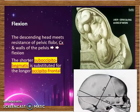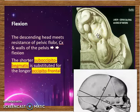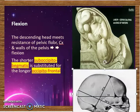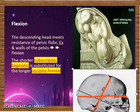Flexion occurs when the descending head meets resistance of the pelvic floor, the cervix, and walls of the pelvis, leading to flexion. The shorter suboccipital bregmatic diameter (9.5 cm) is substituted for the longer occipitofrontal diameter (approximately 12 cm). As the fetus descends, the chin of the fetus will touch its chest during flexion. The diameter that now presents is the suboccipital bregmatic diameter, which is shorter and more favorable for delivery.